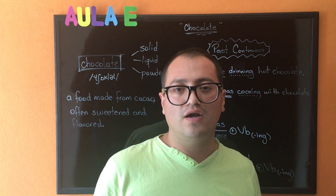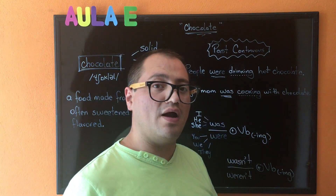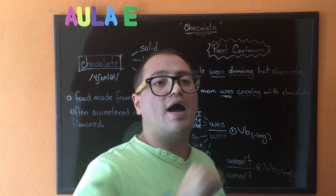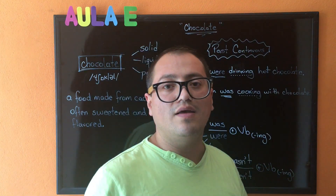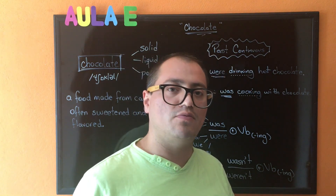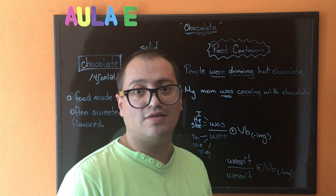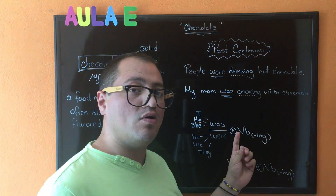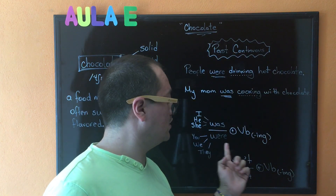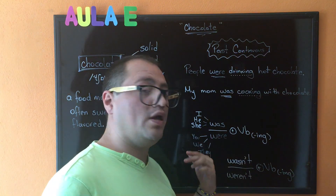If you notice, for past continuous, you're going to use was and were — the verb be in past — and you're going to have a verb ending with -ing. Vamos a utilizar el pasado del verbo be, que en este caso va a ser was o were. Voy a utilizar was con los siguientes pronombres: I, he, and she. Y voy a utilizar were con los pronombres you, we, and they.